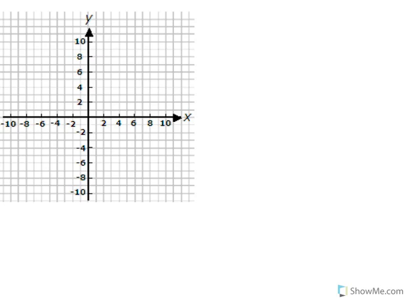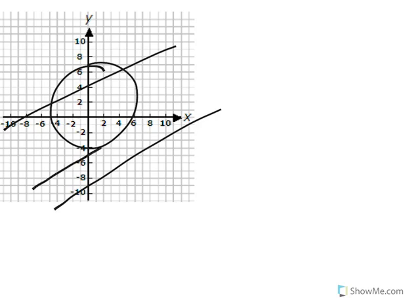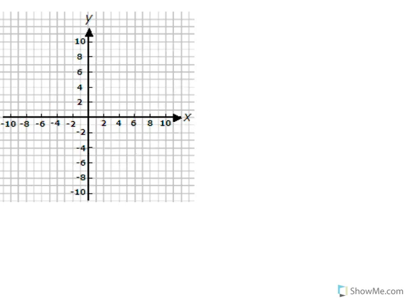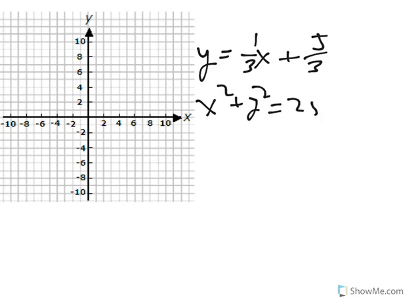When you have a circle and a line, it's possible that that line intersects the circle at 2 points. It's possible that that line intersects the circle at 0 points. And it's possible that the line intersects the circle at exactly one point. And we can find which situation that was by using systems of equations. For instance, let's say the line is y equals one-thirds x plus five-thirds.